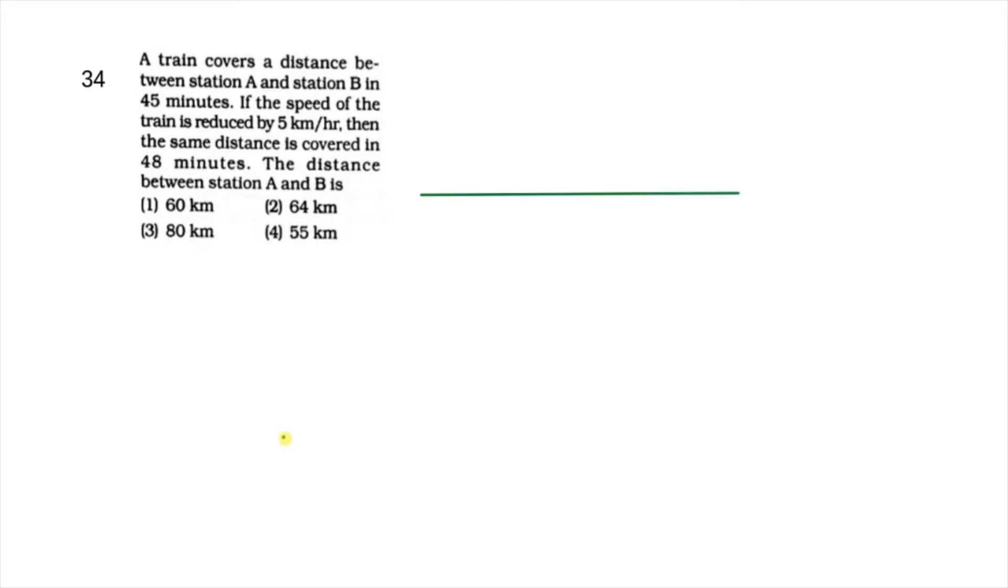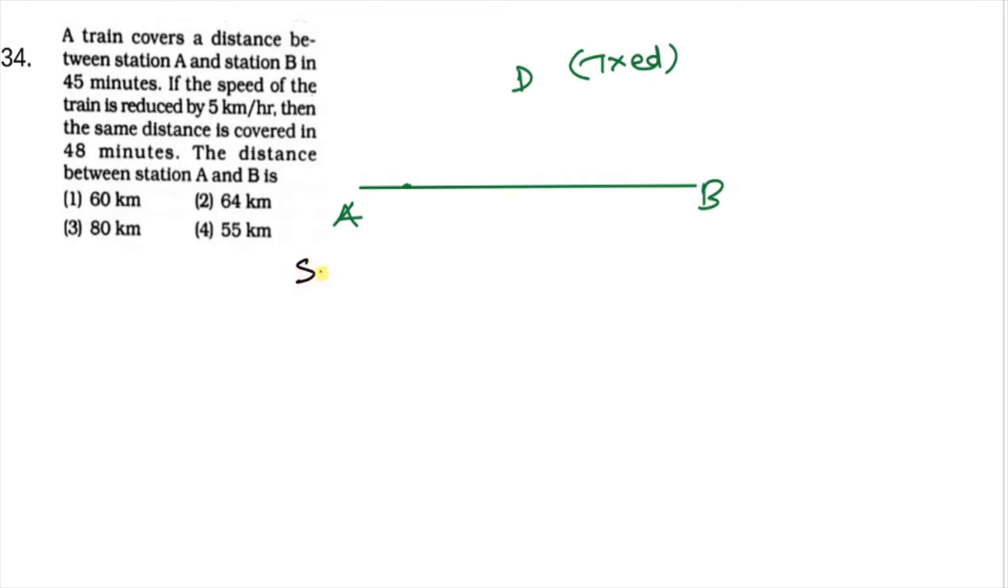The distance between station A and B is—I'll tell you something about speed into time equals distance, and this value is constant. So a definite pattern follows. If one term increases, let's say speed increases, then time will decrease. If speed decreases, then time will increase.